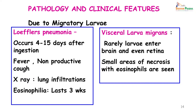Let us look at the pathology and clinical features. When studying worms, one way of looking at the diseases caused is to see which forms of the worm are present in the body. In the case of Ascariasis, the larva travels through the body. When it goes into the lungs it will cause Loffler's pneumonia, which is characterized by fever, a nonproductive cough, and occurs 4 to 15 days after ingestion. The X-ray will show infiltrates in the lung and the patient will also have eosinophilia lasting about 3 weeks.